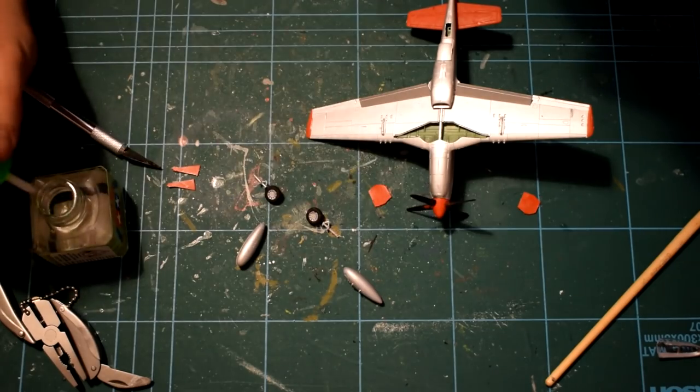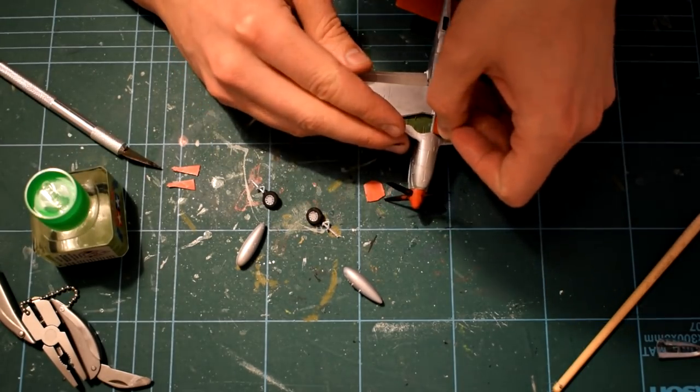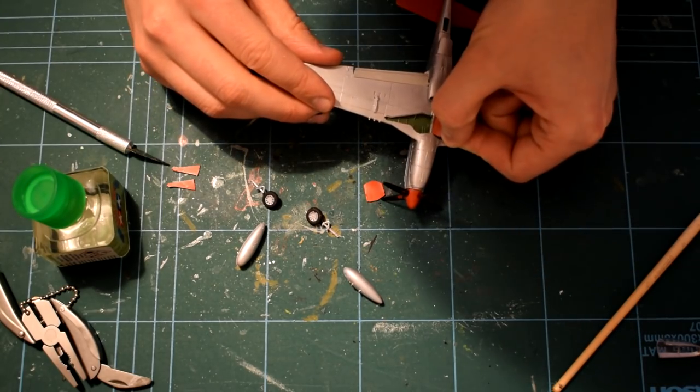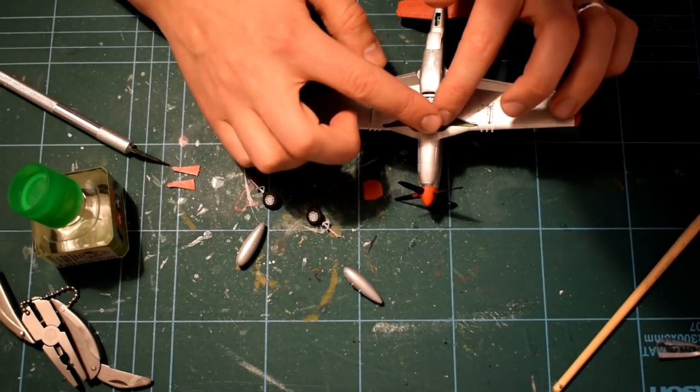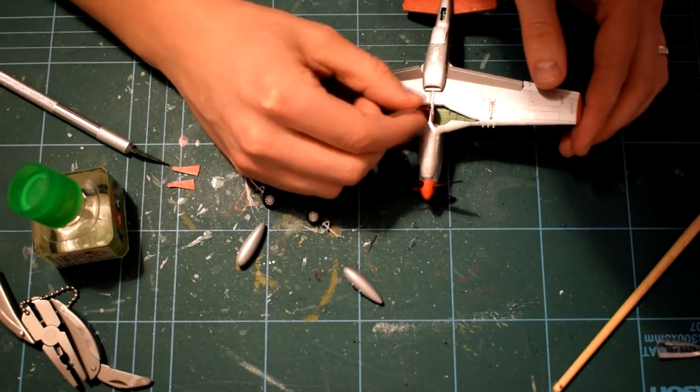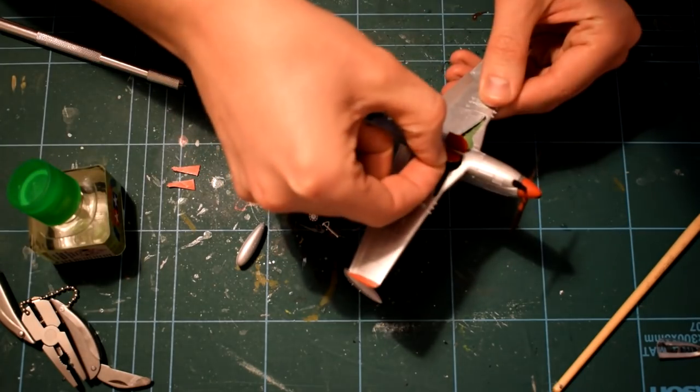Now it was time to add the drop tanks and landing gear to the model. Time has to be taken at this point, as the parts are quite fragile, and some of them, such as the bay doors and drop tanks, will need holding in place whilst they set, in order to prevent them from hanging at the wrong angle. Whilst you watch the completion of this step, I'll tell you a little about the real P-51D Mustang.